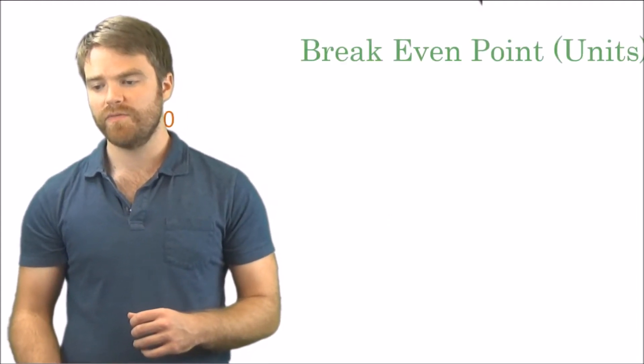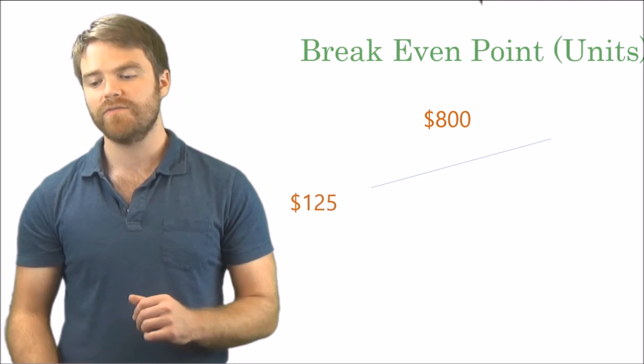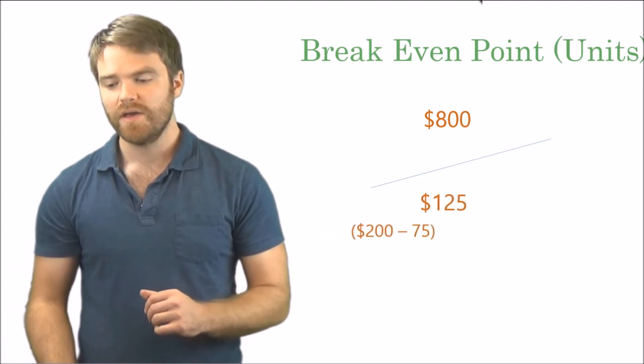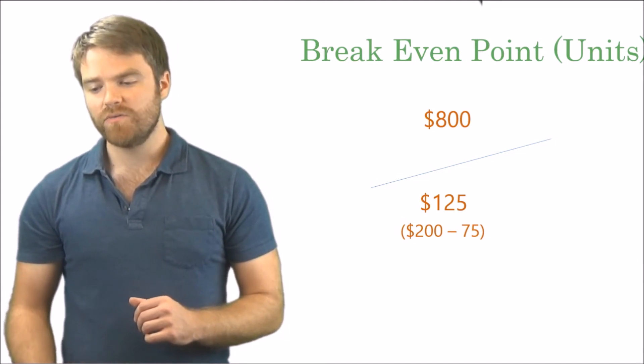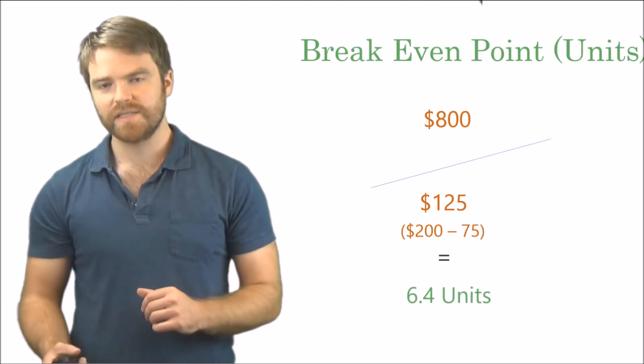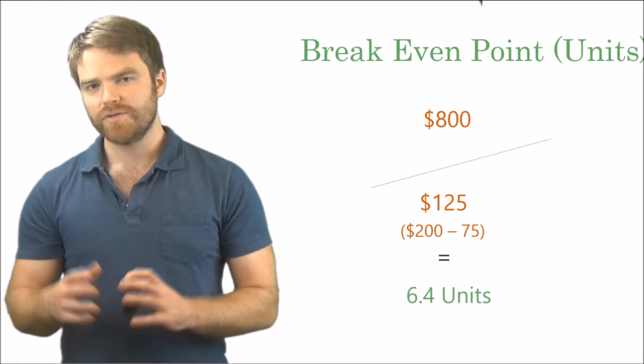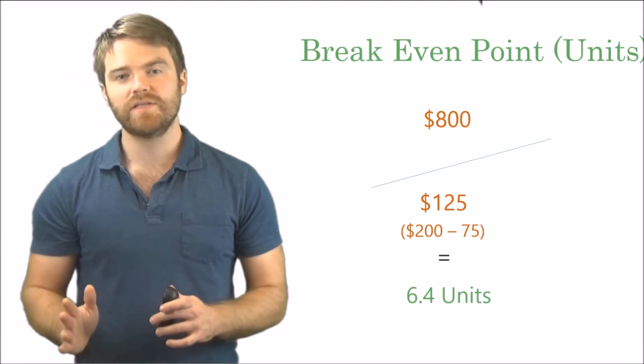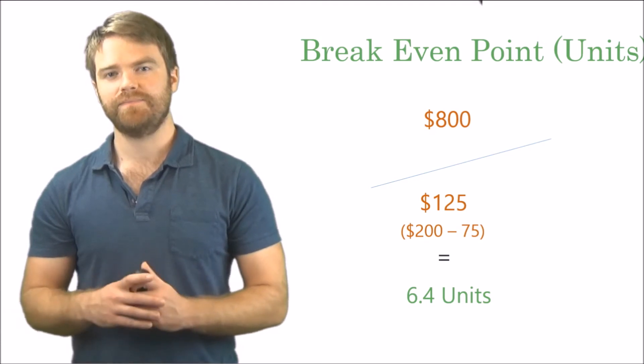So to revisit the formula, $800 fixed costs divided by $125, and I gave it there as well. Now what is that equal? Let's take a look. 6.4 units. You can just call it 6 units to round down.